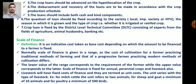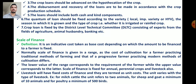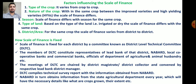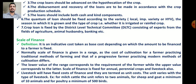Seventh, the crop loan is fixed by the district level technical committee, DLTC, consisting of experts from the fields of agriculture, animal husbandry, banking, etc. These are the seven salient features of the crop loan system.